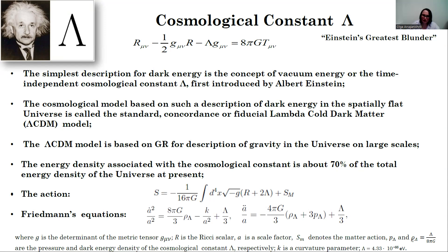This model is based on general theory of relativity for description of gravity in the universe on large scales. The energy density associated with the cosmological constant is about 70% of the total energy density of the universe at present.